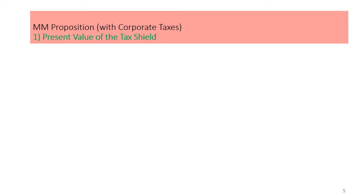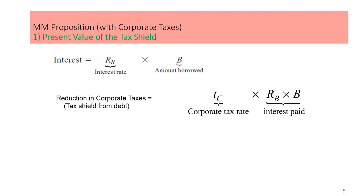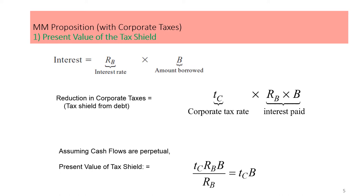Let's learn some basic concepts about the tax shield, or tax saving. A tax shield is a reduction in corporate taxes when a firm has borrowing and interest expense is paid on the debt. The interest expense equals the interest rate times the amount borrowed. The reduction in corporate taxes from the debt is given by a formula. Assuming cash flows are perpetual, the present value of the tax shield discounted at the cost of debt can be simplified as tax rate times amount borrowed.